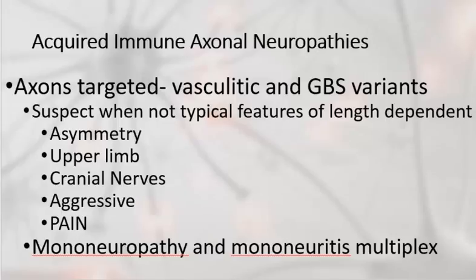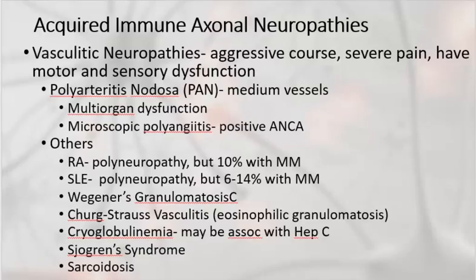Vasculitic neuropathies may cause a mononeuropathy — involvement of one nerve, presumably on the basis of ischemia of the vaso nervorum — or what's called mononeuritis multiplex, which is the involvement of several different individual nerves but not a diffuse symmetrical neuropathy. Conditions which may produce a vasculitic neuropathy show those atypical and aggressive features with severe pain, including polyarteritis nodosa, which involves medium-sized vessels.